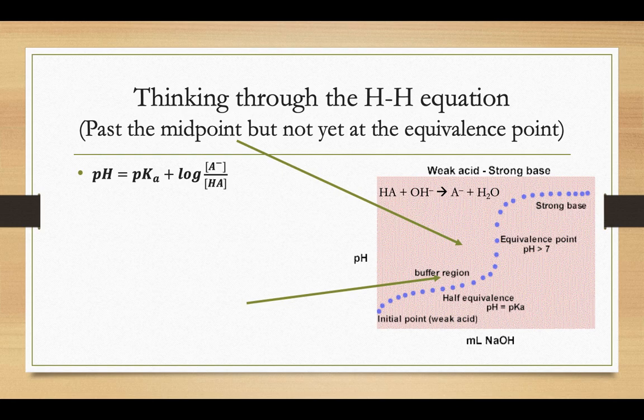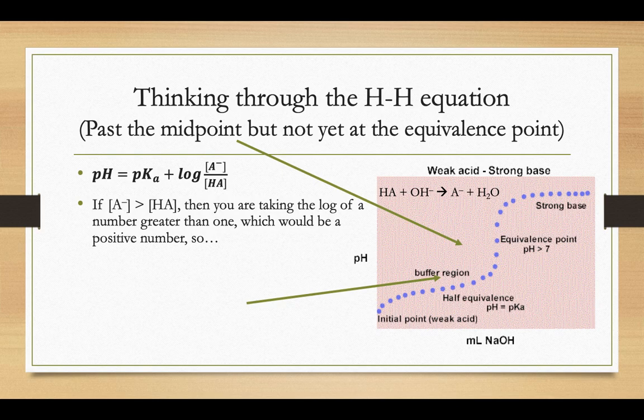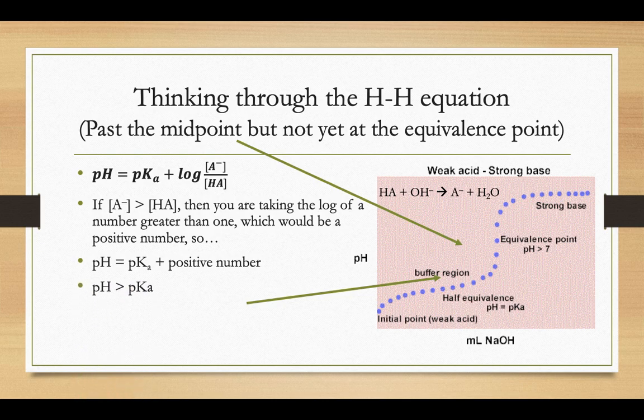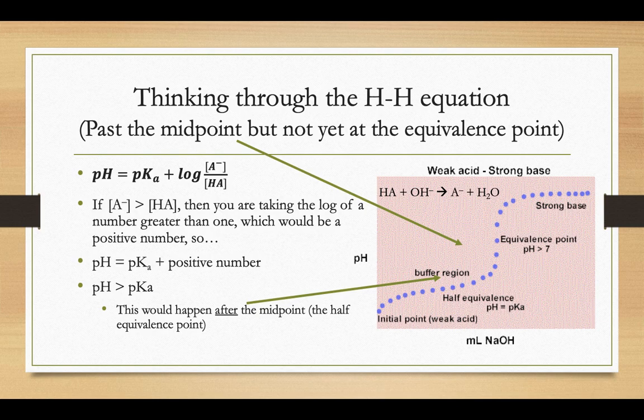Then, what if we're past that midpoint, but we're not at the equivalence point yet? So that means that we have more than half of our HA has turned into A minus. So we have more A minus than HA. If A minus is bigger than HA, we're going to be taking the log of a number that's greater than 1, which would be some kind of positive number. So if we do pH equals pKa plus some kind of positive number, that means the pH is going to be greater than the pKa when you're at that section of the graph. So past the midpoint, but not at the equivalence point yet, when you're in that blue highlighted zone there, that's when your pH is going to be greater than your pKa.